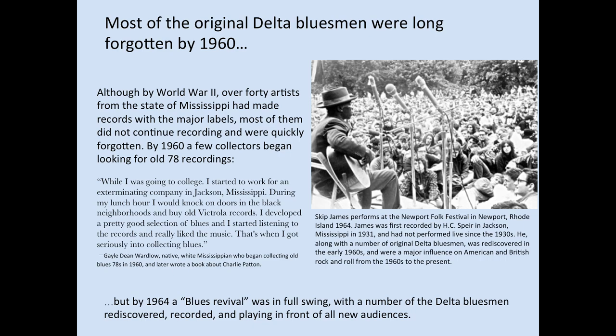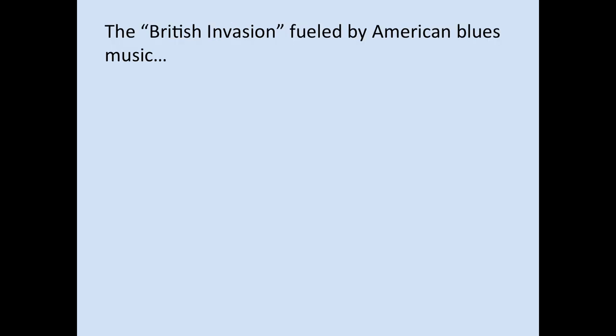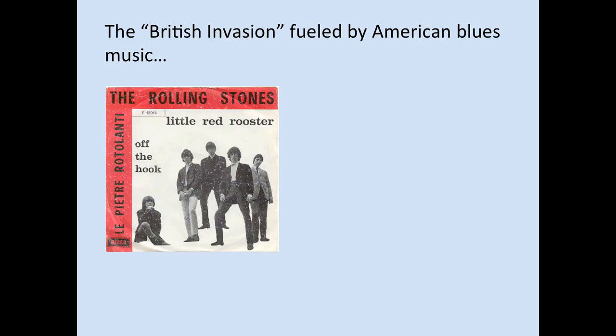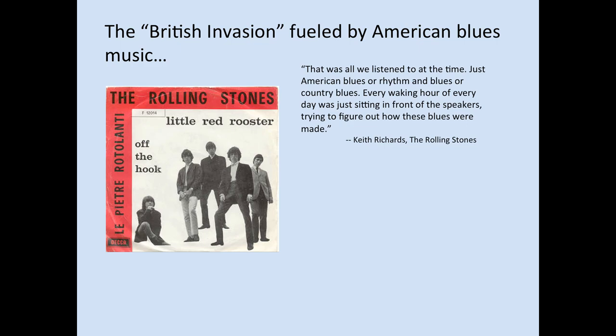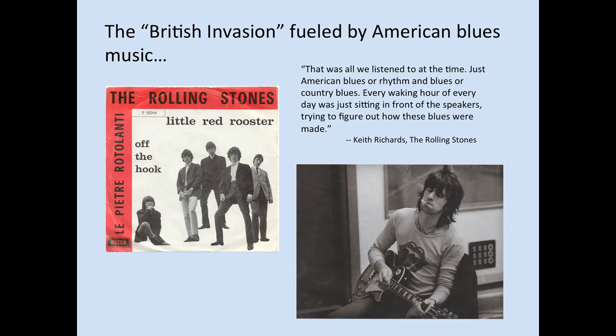This was all part of a blues revival by the early 1960s, and some of the original performers from the Delta were located by blues collectors like Gayle Dean Wardlow and brought back to new popular white audiences in the North. Skip James — first recorded back in Jackson by H.C. Spire in 1931, who had not performed live since the 1930s — was rediscovered in the early 1960s and performed at the Newport Folk Festival in Newport, Rhode Island in 1964. He, along with a number of original Delta bluesmen, became a major influence on American and British rock and roll. The so-called British Invasion of the 1960s was fueled by British bands who had learned to play by listening to American blues music on radio in England in the 1950s. The Rolling Stones made no bones about the fact that their greatest influence stemmed from the music of the Mississippi Delta. As Keith Richards, the guitarist, said: 'That was all we listened to at the time — just American blues, or rhythm and blues, or country blues.'